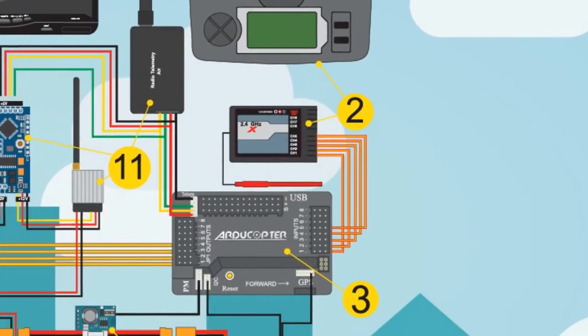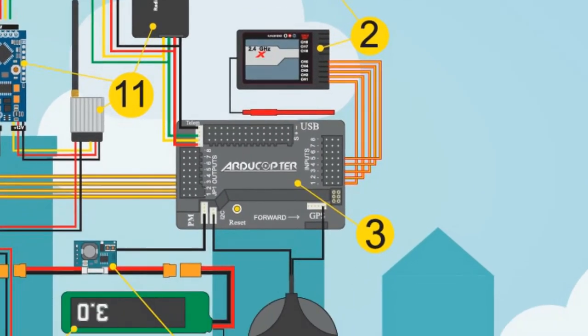The flight controller is the brain of the drone. It receives sensory input and provides orders to stabilize the drone. Advanced controls permit auto-type, takeoff, waypoint navigation, and landing.